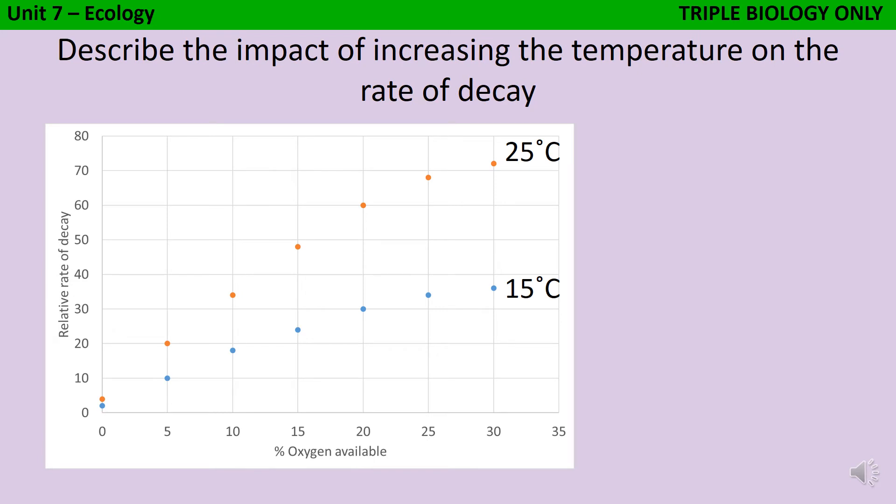Alternatively, you might be given some data to analyze, like this graph, which shows you how the rate of decay changes with changing temperature and changing oxygen availability. This would be a two-mark question. Pause the video and see if you can write down the two marking points.